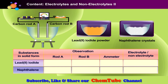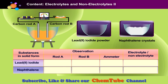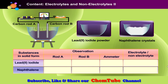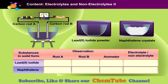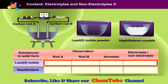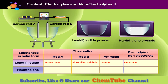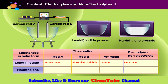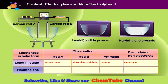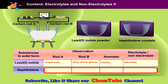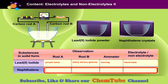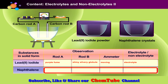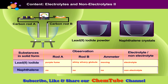Click the lead(II) iodide powder and observe the ammeter and any changes around the carbon rods. Fill in the observation table and press enter when done. Then click the other substance — naphthalene — and observe the ammeter and any changes around the carbon rods. Fill in the observation table and press enter when done. What conclusion can you draw from this investigation?